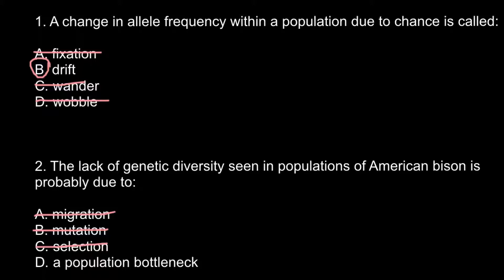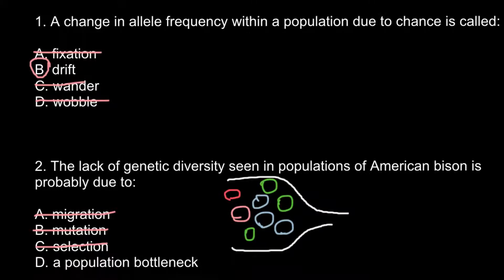So imagine that at the beginning we had a diversity of bison, and I can just use different colors to represent different alleles present in this gene pool. Some alleles can be present in more quantities, some in smaller quantities. But anyway, this was the initial situation. So there was diversity.